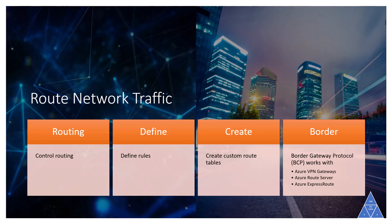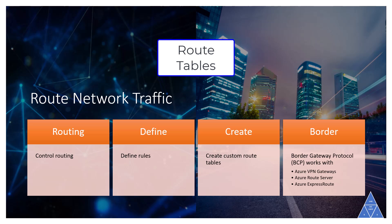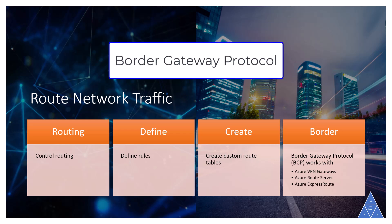By default, Azure routes traffic between subnets on connected virtual networks, on-premise networks, and the internet. You can also control routing and override these settings. Route tables allow you to define rules to direct traffic, and you can create custom route tables that control how packets are routed between subnets. Border Gateway Protocol, BGP for short, works with Azure VPN gateways, Azure Route Server, or Azure ExpressRoute to propagate on-premises BGP routes to Azure virtual networks.